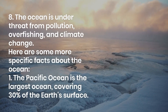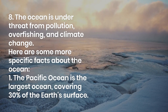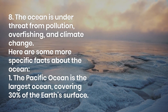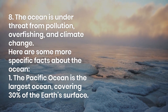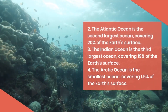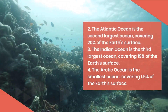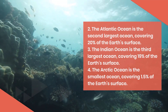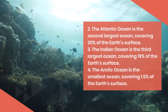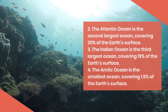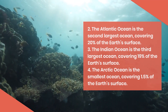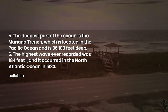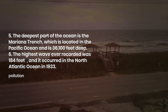More specific facts: The Pacific Ocean is the largest ocean, covering 30% of the Earth's surface. The Atlantic Ocean is the second largest, covering 20%. The Indian Ocean is the third largest, covering 19%. The Arctic Ocean is the smallest, covering 1.5% of the Earth's surface. The deepest part of the ocean is the Mariana Trench, located in the Pacific Ocean at 36,100 feet deep.